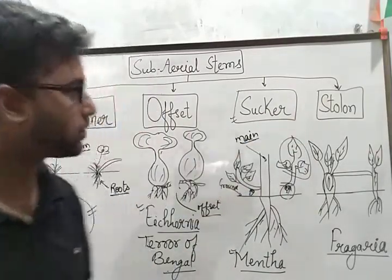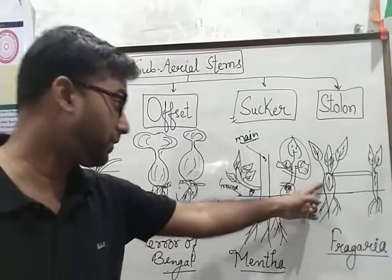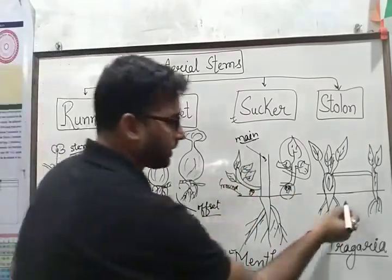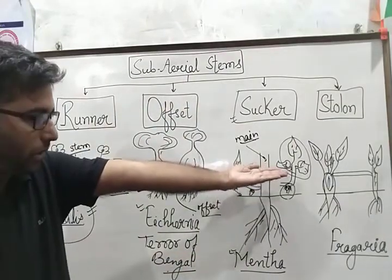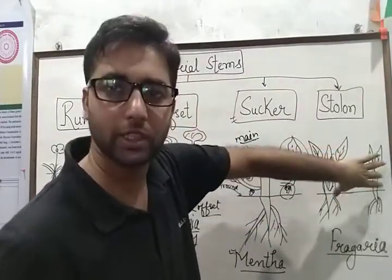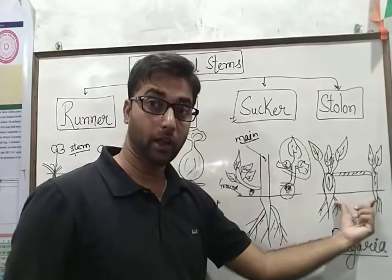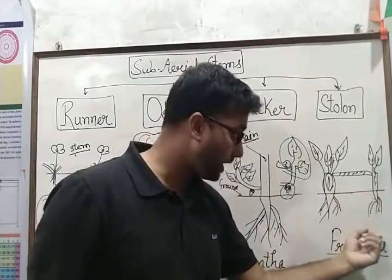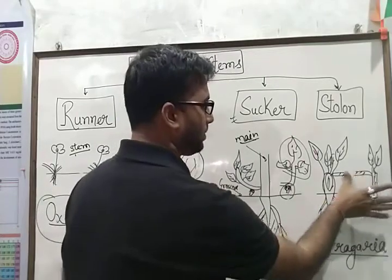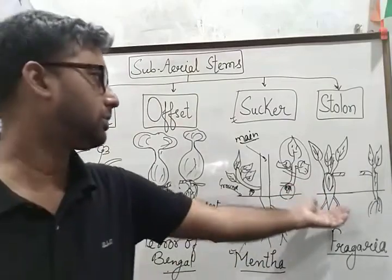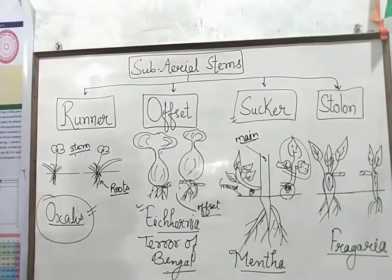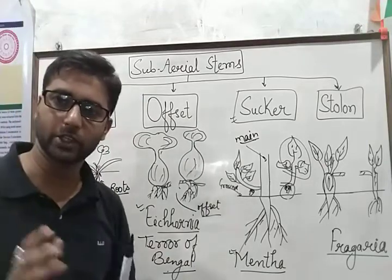Next one is stolon. Stolon is another sub-aerial stem, very similar to the sucker. The only difference is that here branches move parallel to the ground and then move upward, but in stolon it is strictly bound with two structures, and in both structures roots are well established inside the ground. Whenever you break this, or it breaks naturally, both structures again grow into new plants. This is all about the sub-aerial stem method of vegetative propagation.